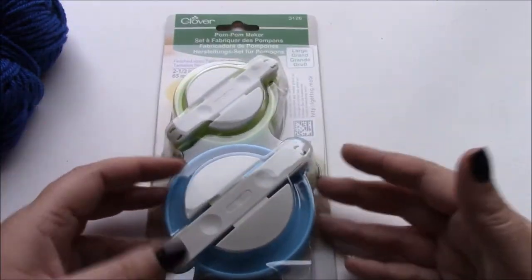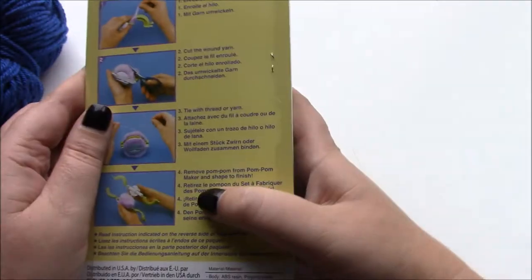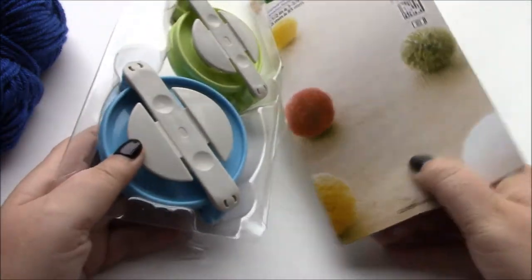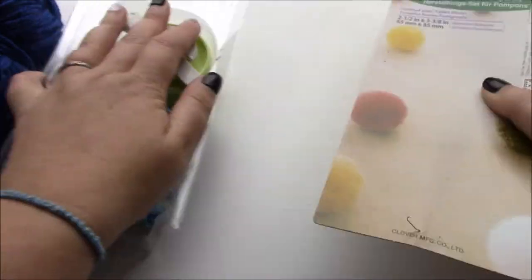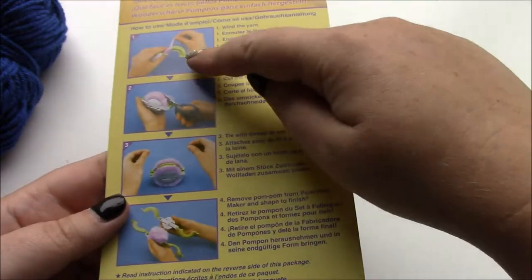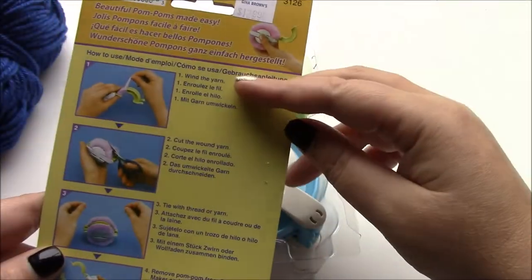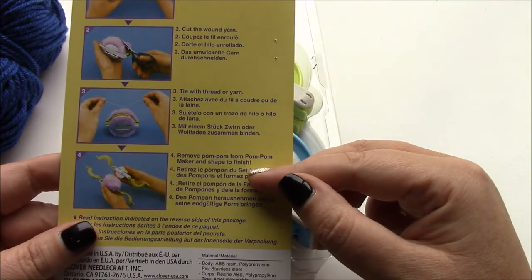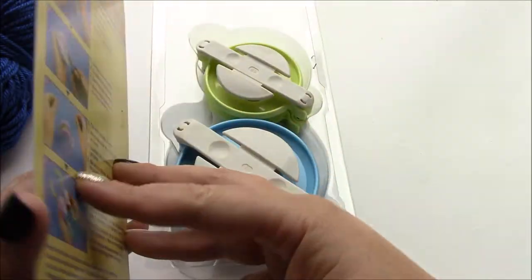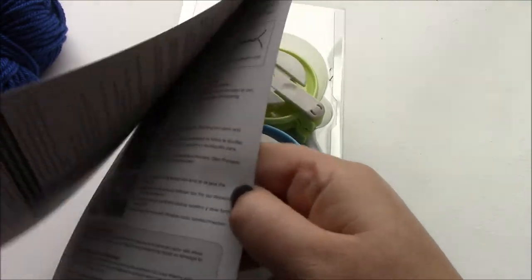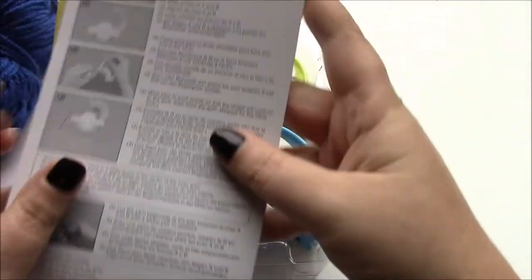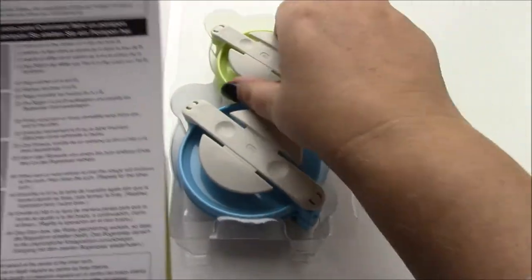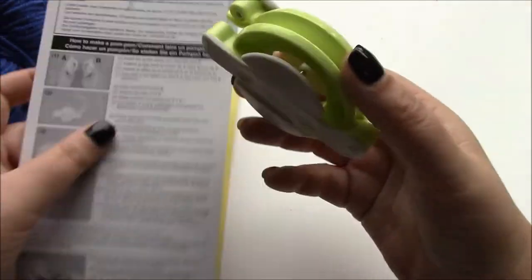Now I don't know what I'm doing. I haven't got a clue. I've never used one of these before. So I'm just going to get into it. Now it does have some instructions on the back. So wind the yarn, cut the yarn, tie a thread or a yarn and remove a pom-pom to finish. Oh hang on, it's got more instructions inside. So if I open it out. Let me get the smaller one which I think will be easier. So let's explore it.